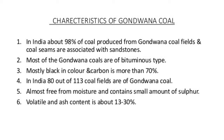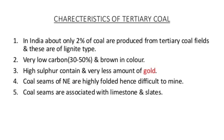The other type of coal found in India is from tertiary coal fields, formed more recently — around 55 to 60 million years ago. In India, only about 2% of coal is produced from tertiary coal fields. These are of the lignite variety, containing very low carbon — only 30 to 50% — and are brown in color with high sulfur content.